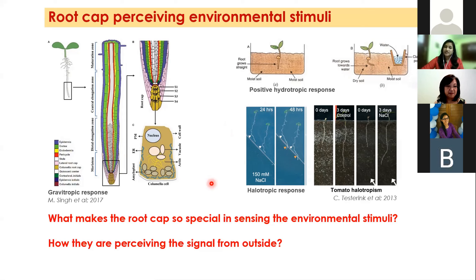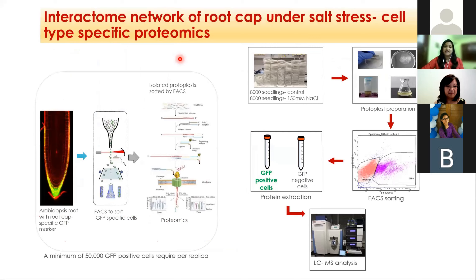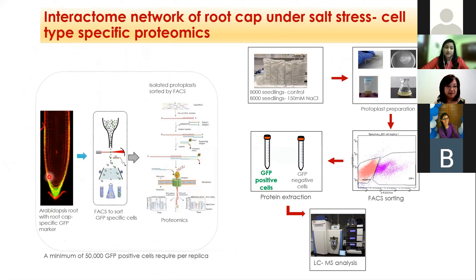So what makes this root cap so special in sensing environmental stimuli, or how is it perceiving signals from outside? In order to address these questions, we decided to look into the proteins present on the root cap when the plant is undergoing abiotic stress. In today's talk I will be focusing more on salt stress. To do that, we decided to perform cell-type specific proteomics — a root cap specific proteomics under salt stress — using FACS (fluorescent activated cell sorting) and LC-MS analysis.